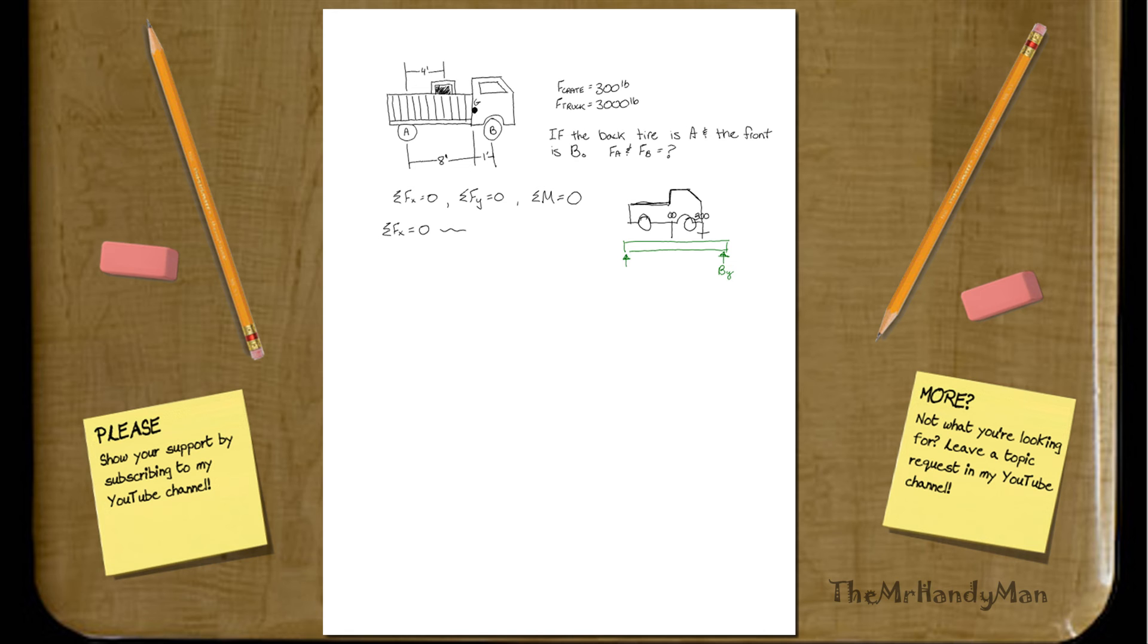your AY over here and some 3,000 pounds right here and some 300 pounds right here.